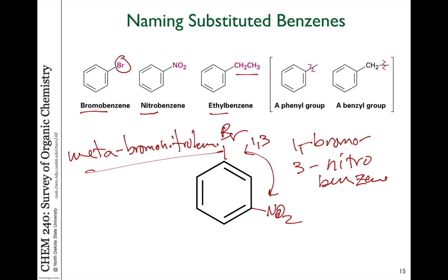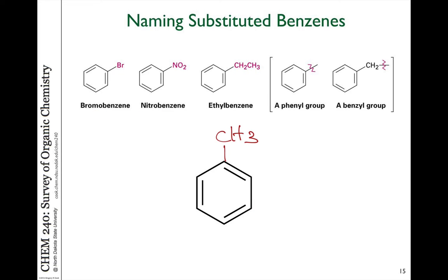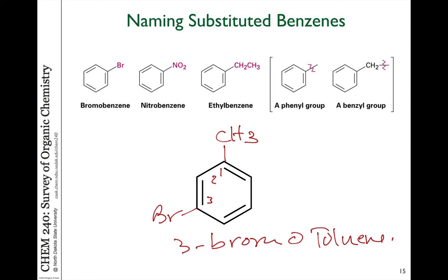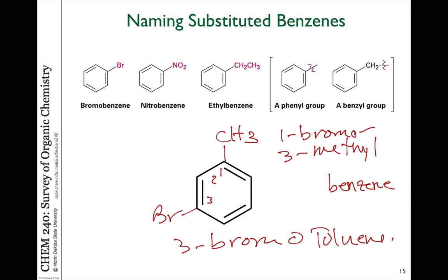Since the 1-3 relationship is referred to as a meta-relationship, we can also call it meta-bromonitrobenzene. Keep in mind, if we're going to use a common name such as toluene, the word toluene includes that CH3 group. So if we have a bromotoluene — for example, a bromine here — that would be 3-bromotoluene, not 3-bromo-methylbenzene or methyl toluene.